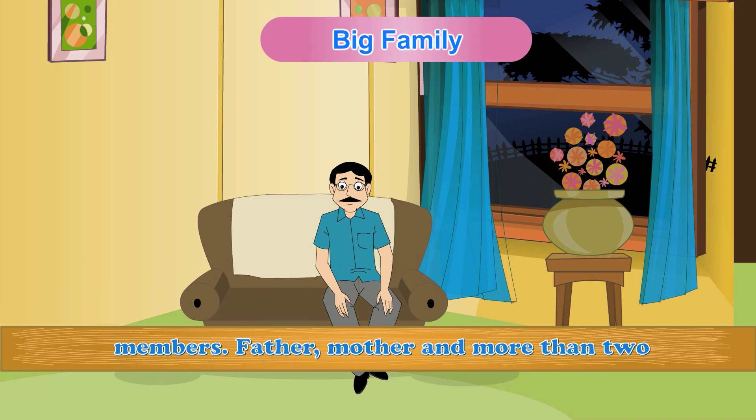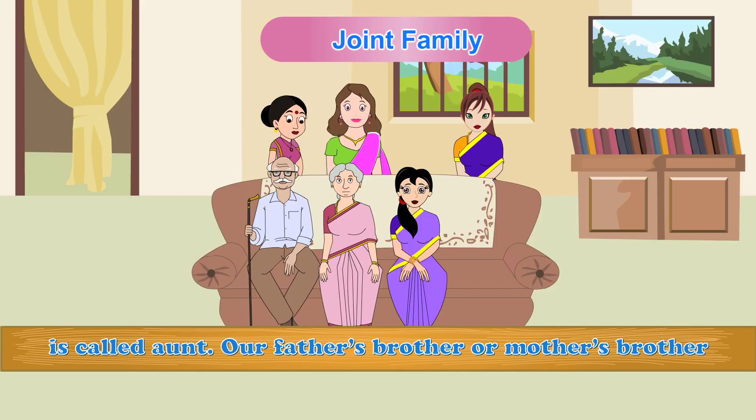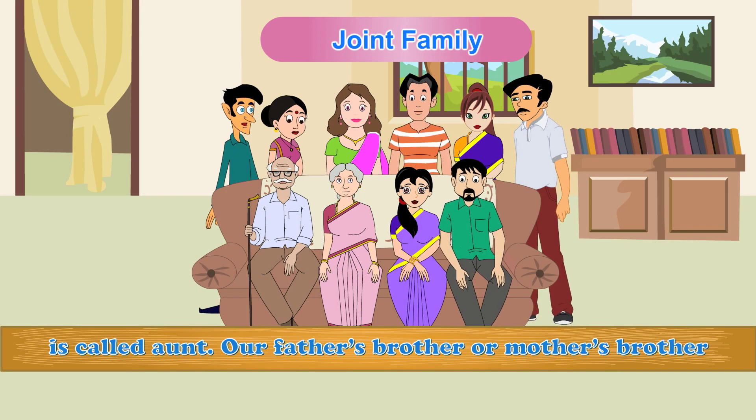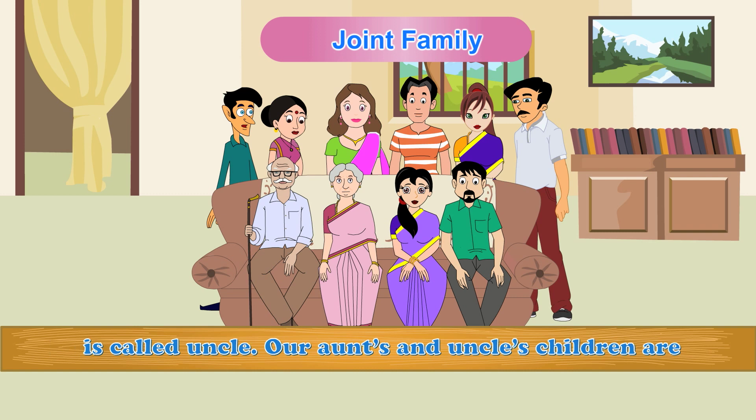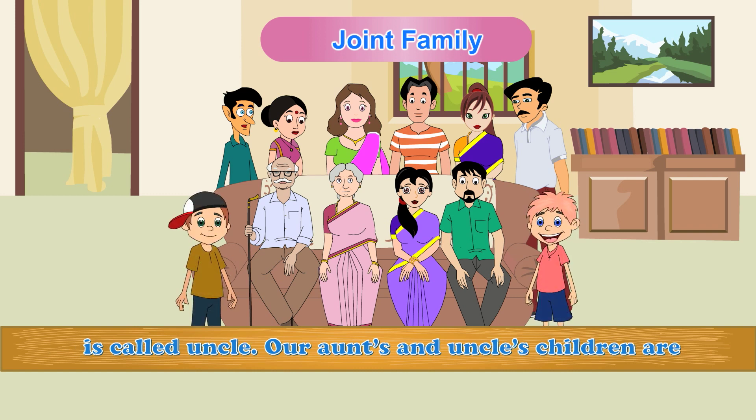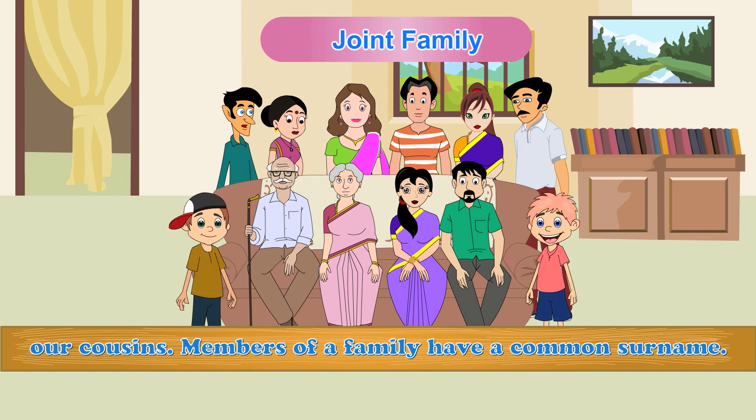We have many relations in our family. Our father's father or mother's father is called grandfather. Our father's mother or mother's mother is called grandmother. Our father's sister or mother's sister is called aunt. Our father's brother or mother's brother is called uncle. Our aunt's and uncle's children are our cousins.